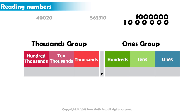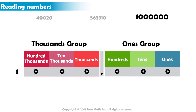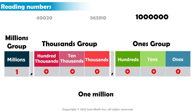Finally, the last number has zeros both in the thousands group and in the ones group. Remember how we separate the digits into groups? Since we already have three digits in the ones group and three digits in the thousands group, the one is a digit that should go to the next group. This group is called the millions group. So, we have one in the millions group and zeros in the other groups, and this number is simply read as one million.